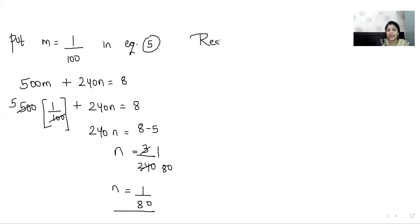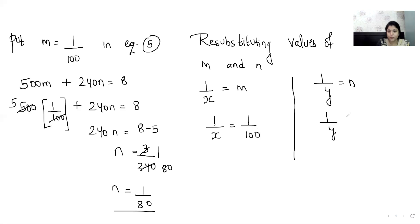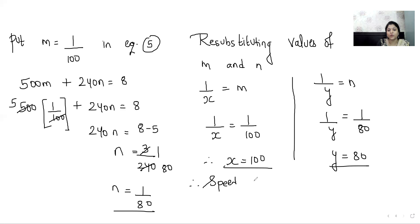Now we resubstitute the values of m and n. We assumed 1/x = m and 1/y = n. Since m = 1/100, taking the reciprocal gives x = 100. Since n = 1/80, taking the reciprocal gives y = 80. Therefore, speed of train is 100 kilometers per hour and speed of car is 80 kilometers per hour.